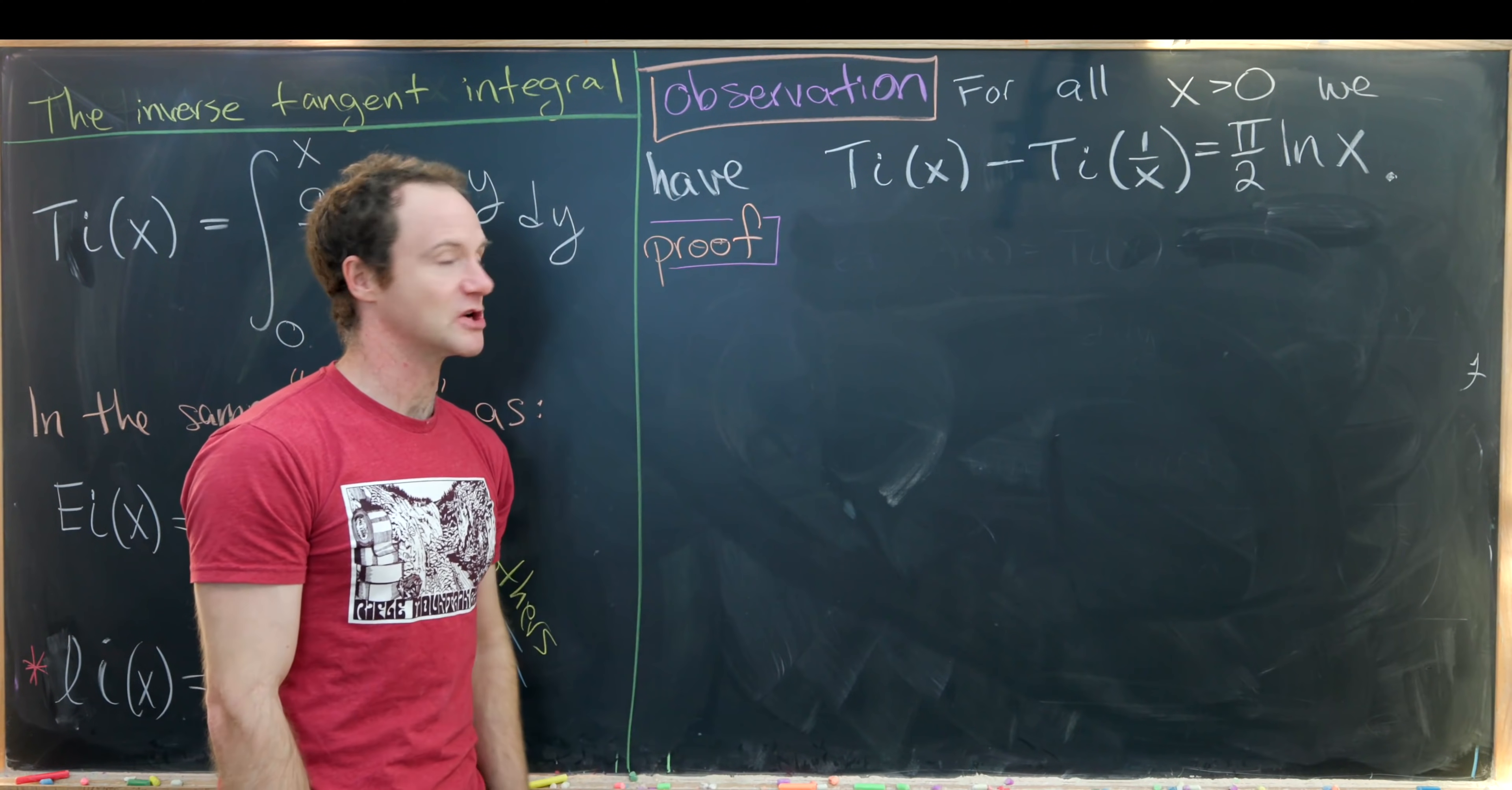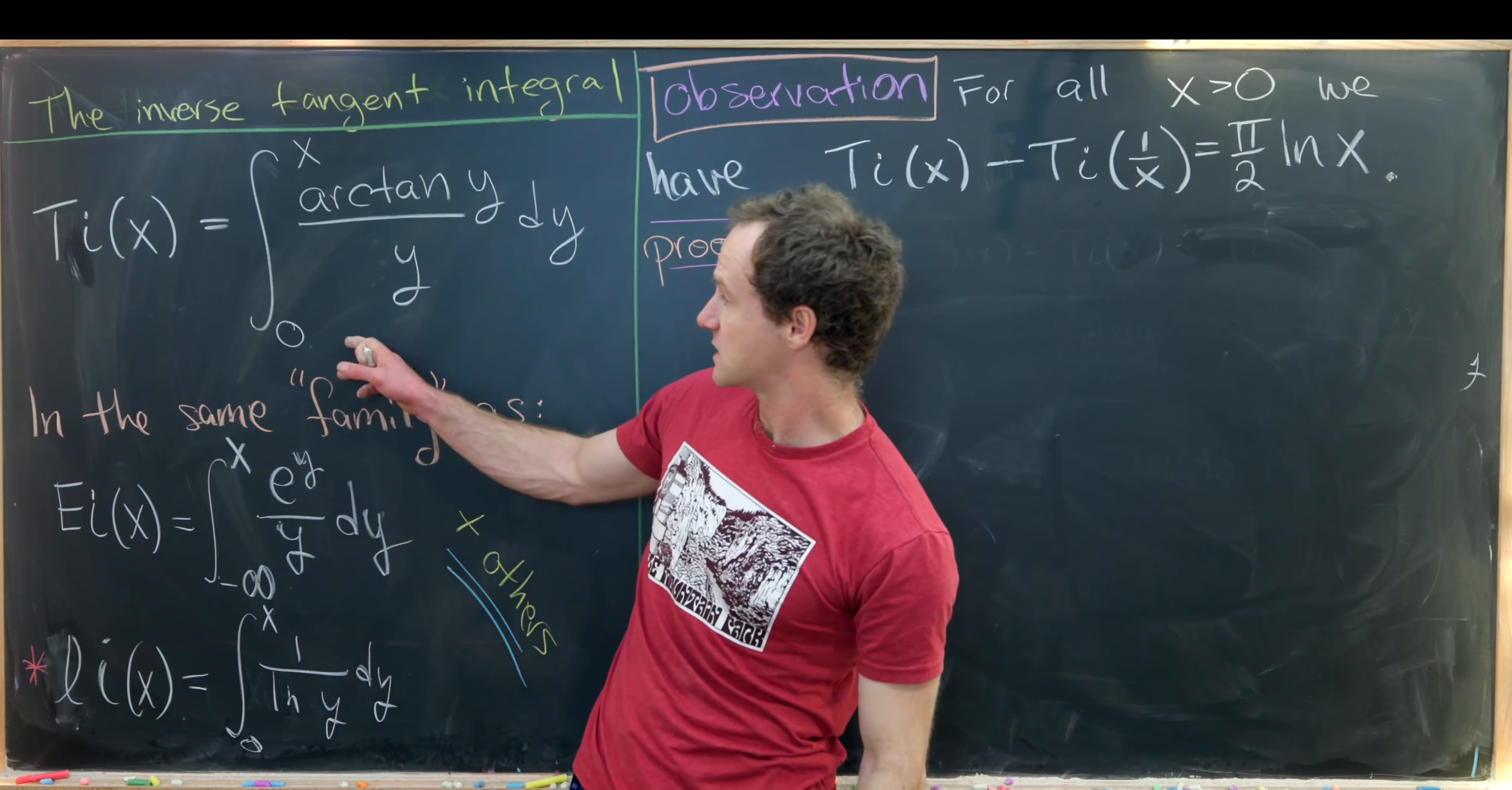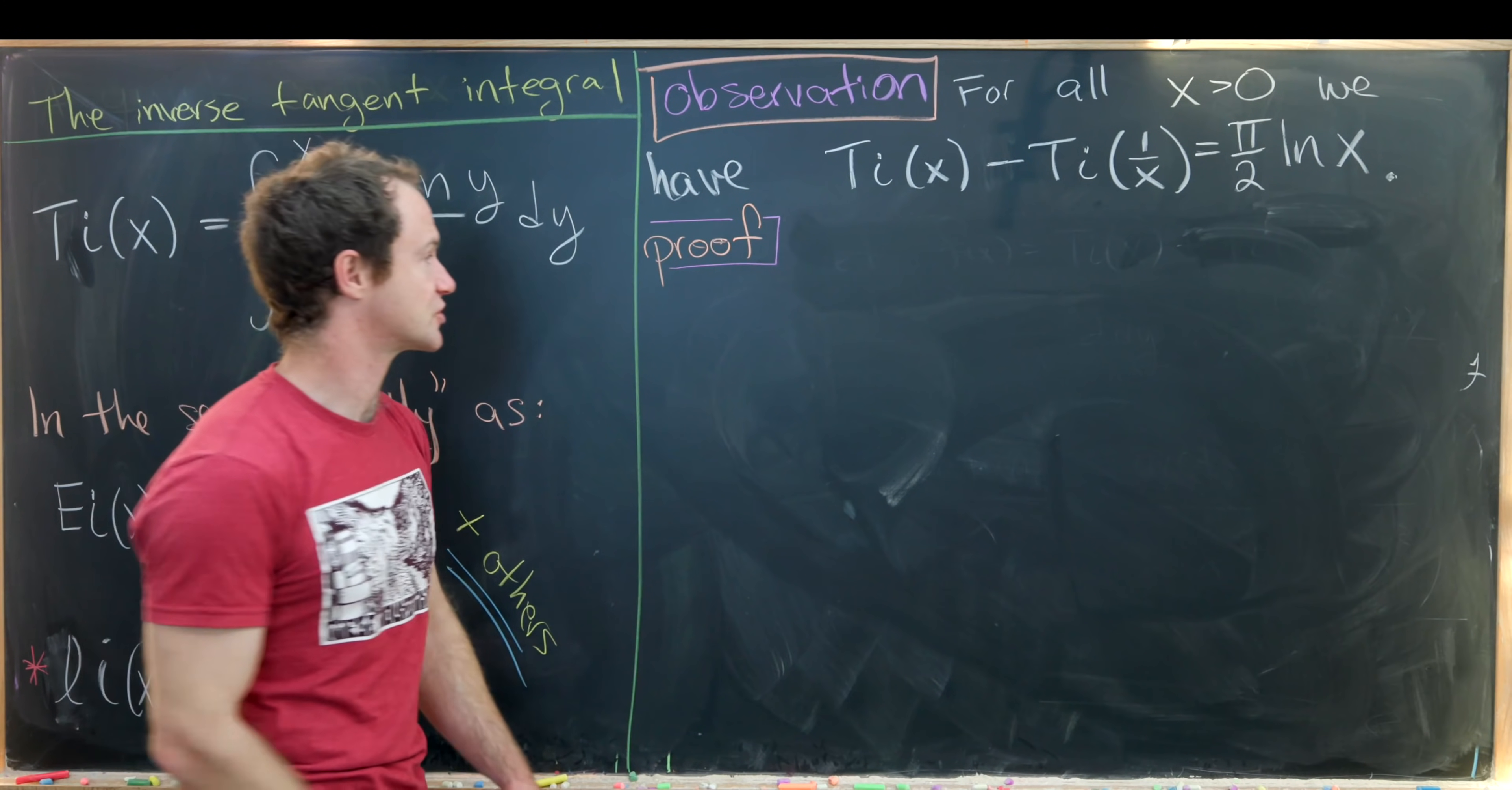There are probably a bunch of different ways to do this. One of them could be to write this Ti of 1 over x using its definition and then doing some substitutions. But I think the easiest way to do it is with a differential equation.